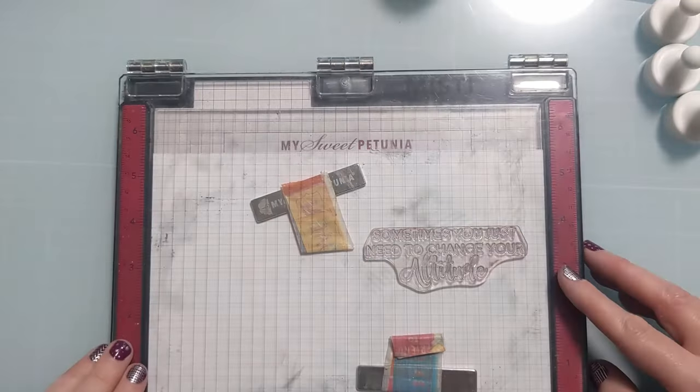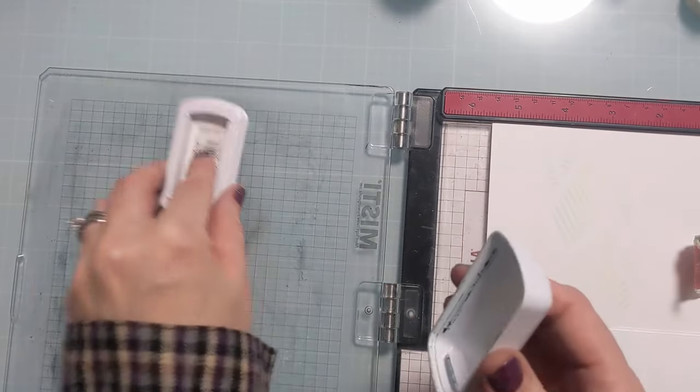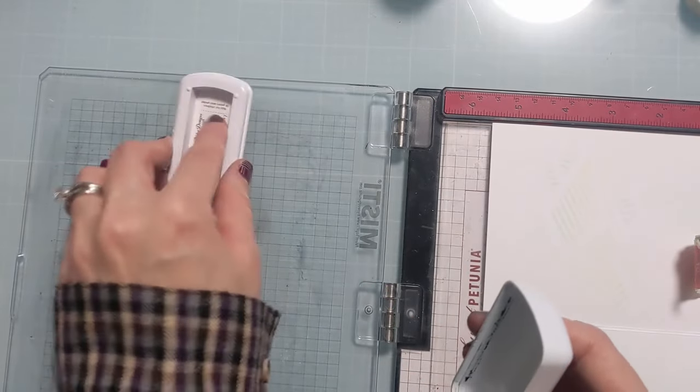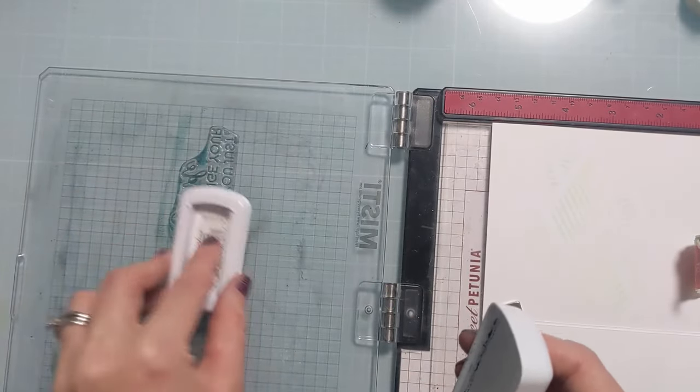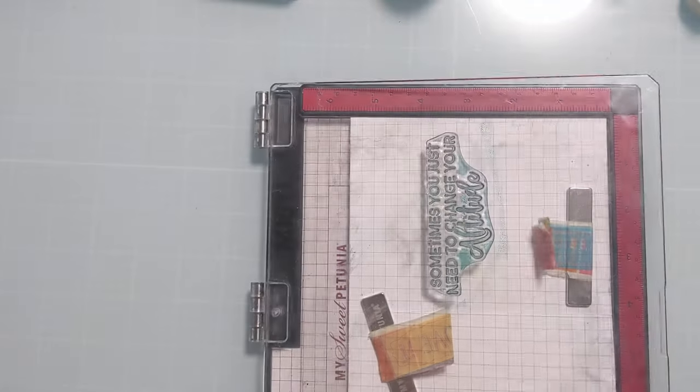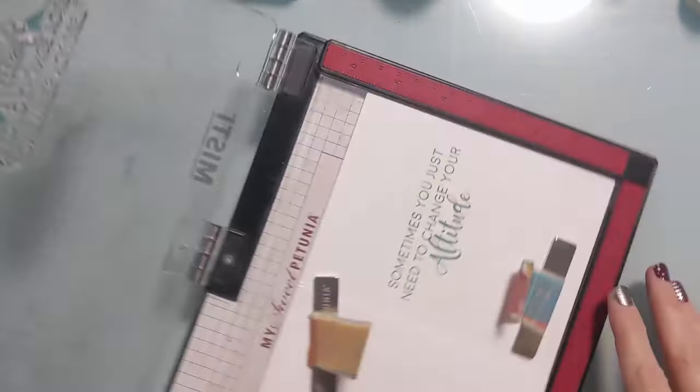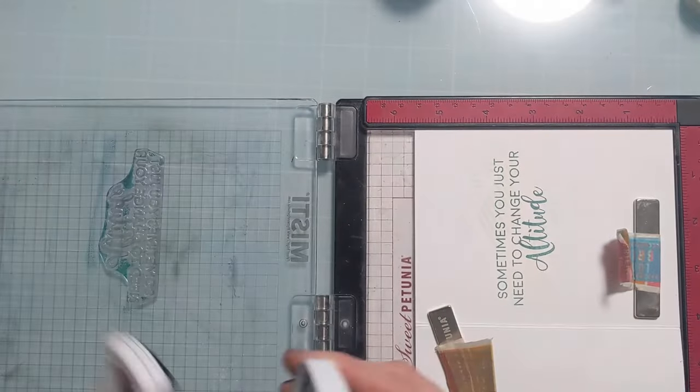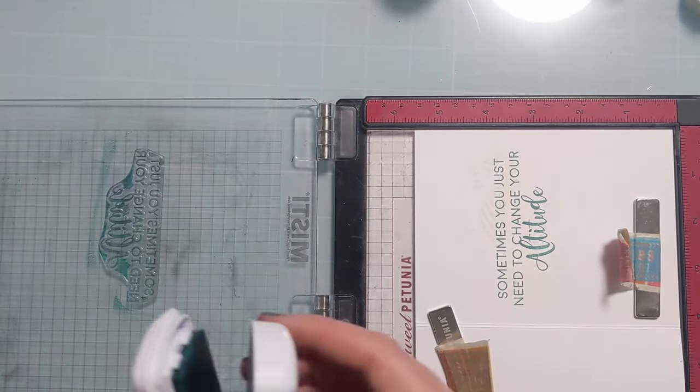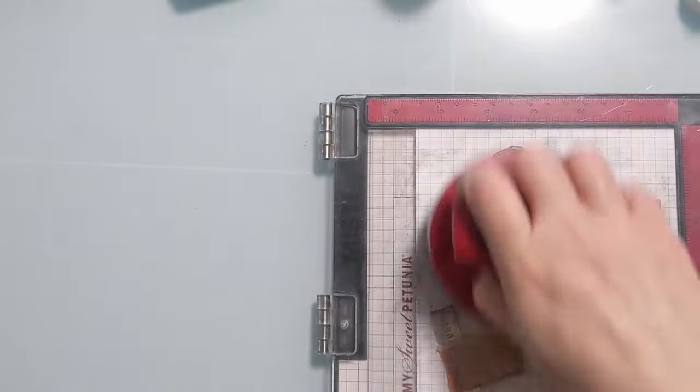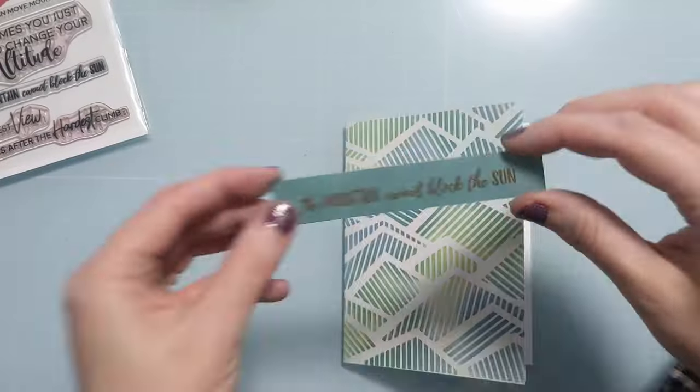So it says sometimes you just need to change your altitude. So I think that's such a cool kind of clever way to again tie in the whole you know mountain theme with altitude and things like that. So I'm going to stamp this on the inside of the card. Again use my press tool. Make sure I have a nice even impression. I think I'll stamp it one more time just to make sure it's nice and rich and even and then that will tie in the color as well from the front of the card.